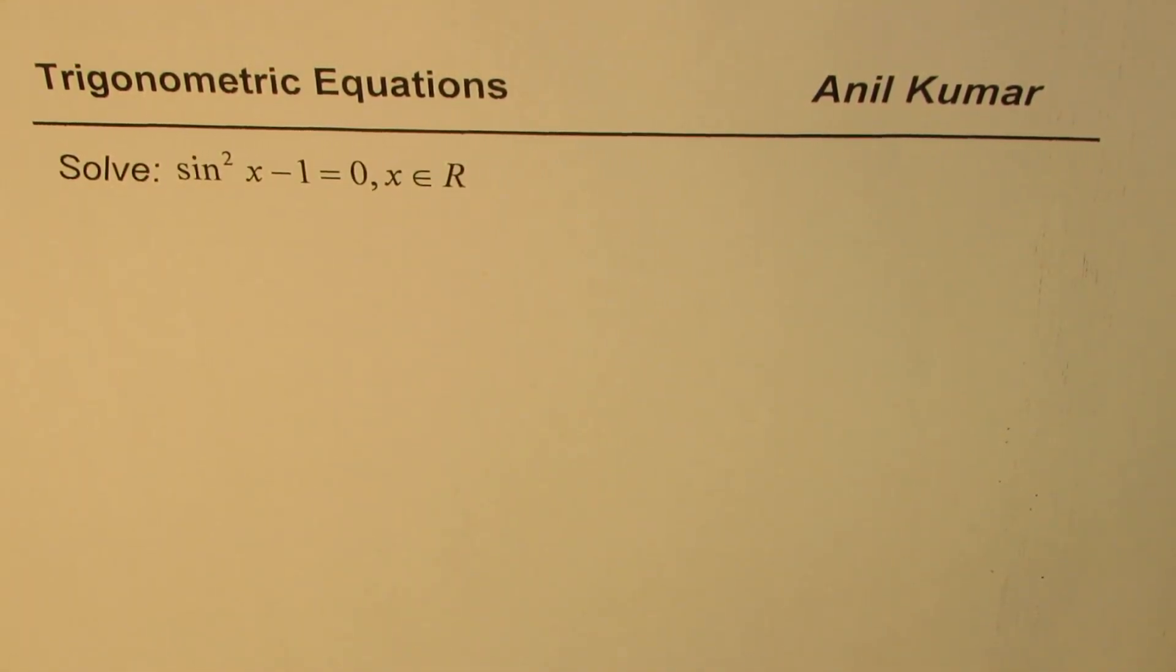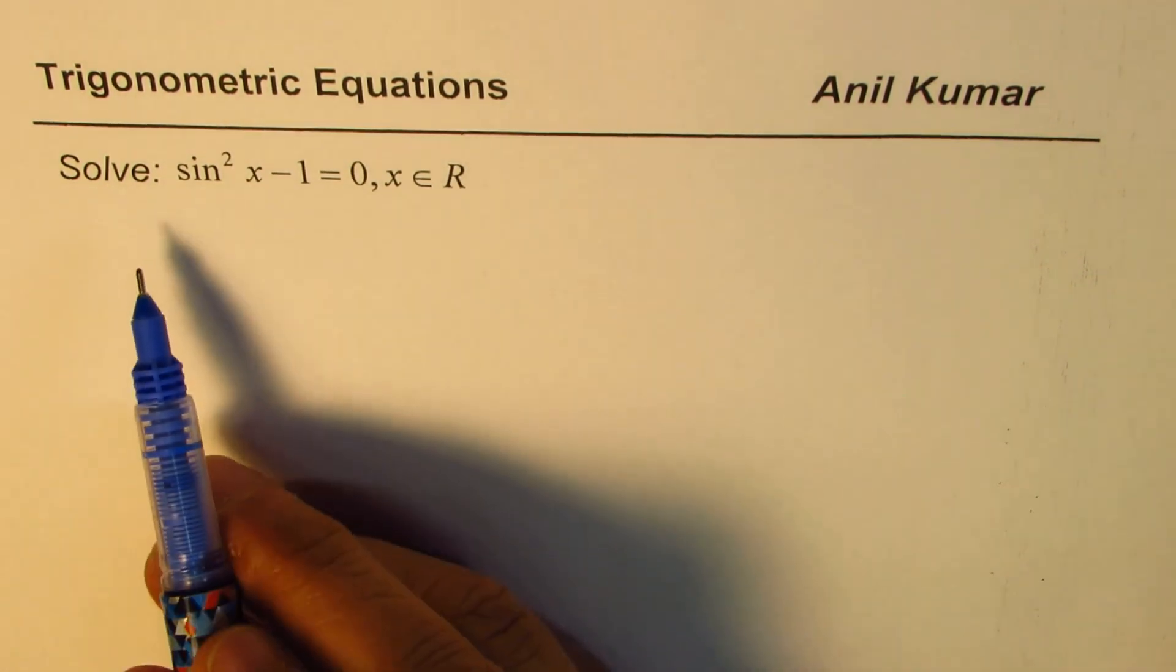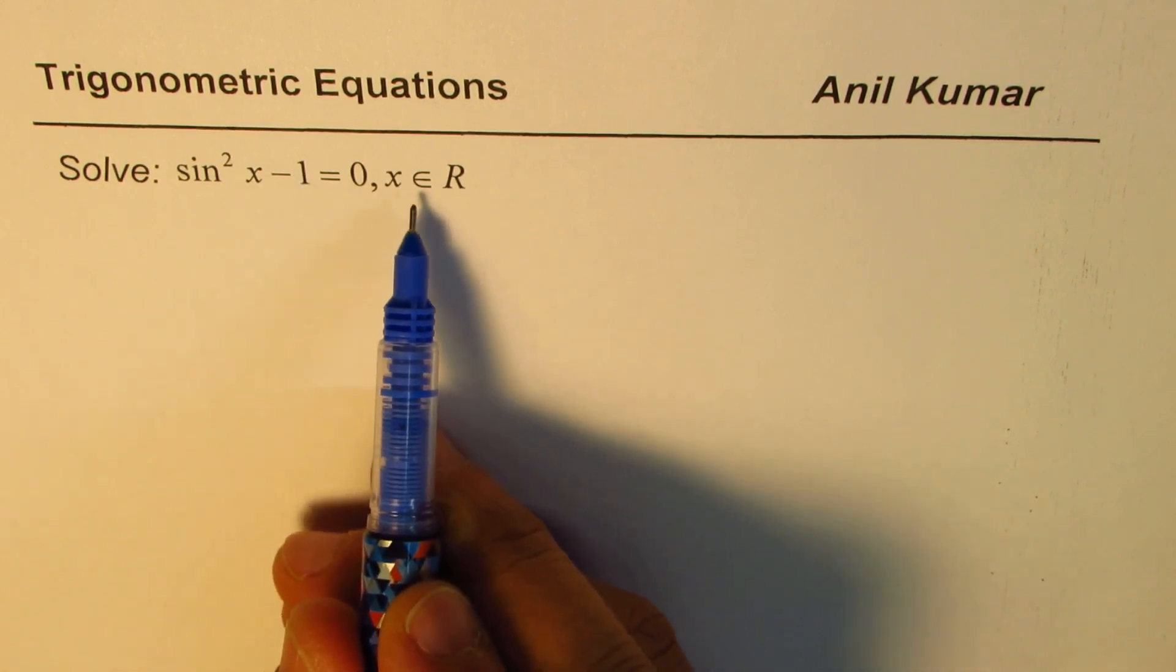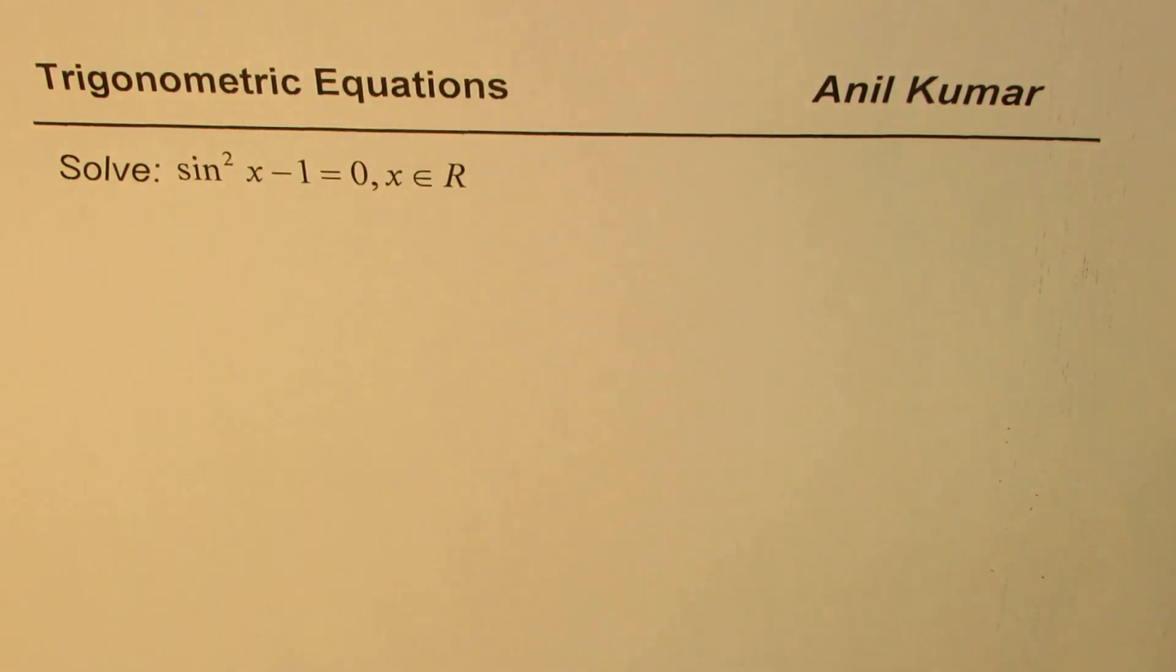I'm Anil Kumar. In this video, we will learn the steps to solve trigonometric equations. The equation here is sine square x minus 1 equals to 0, where x belongs to real numbers.